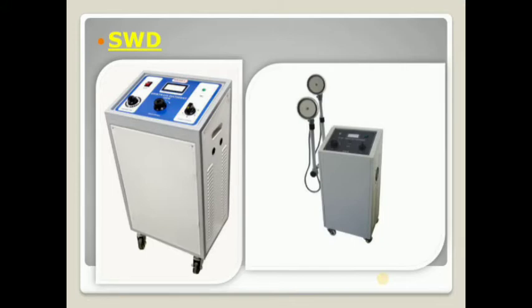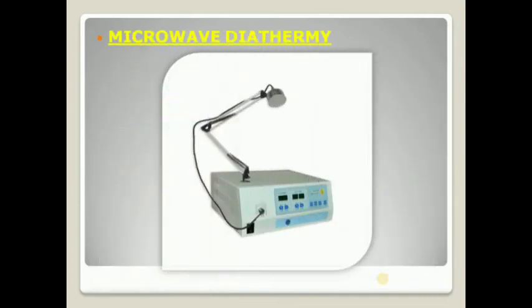Like short wave diathermy, there is also microwave and long wave diathermy. The frequency of microwave diathermy is 2450 megahertz. Microwave diathermy uses electromagnetic radiation by microwaves. It heats to a lesser tissue depth than the SWD. It is mainly used to heat superficial muscles and joints. As you see, the picture of the microwave diathermy.